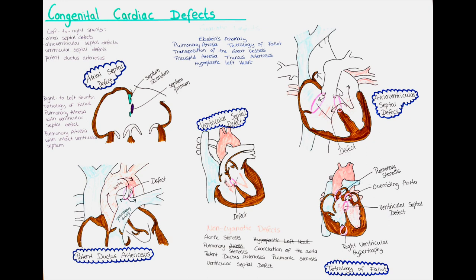In larger defects, a catheter intervention might be necessary, where a transcatheter device is used to close the defect. Another surgical approach for larger oval defects is closure by direct suturing. In rounder defects, a patch can be used, made from Dacron or from the patient's own pericardium. The prognosis after surgery is usually excellent.